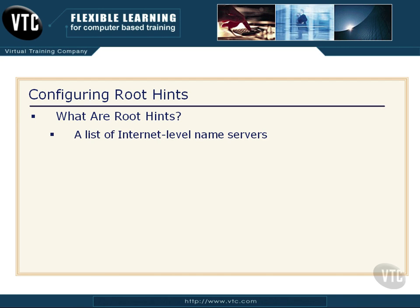Root Hints are a list of internet-level name servers. These are top DNS name servers out there on the internet, and they have a collection of all the domains listed in the .com, .net, and .org namespaces, and on and on.